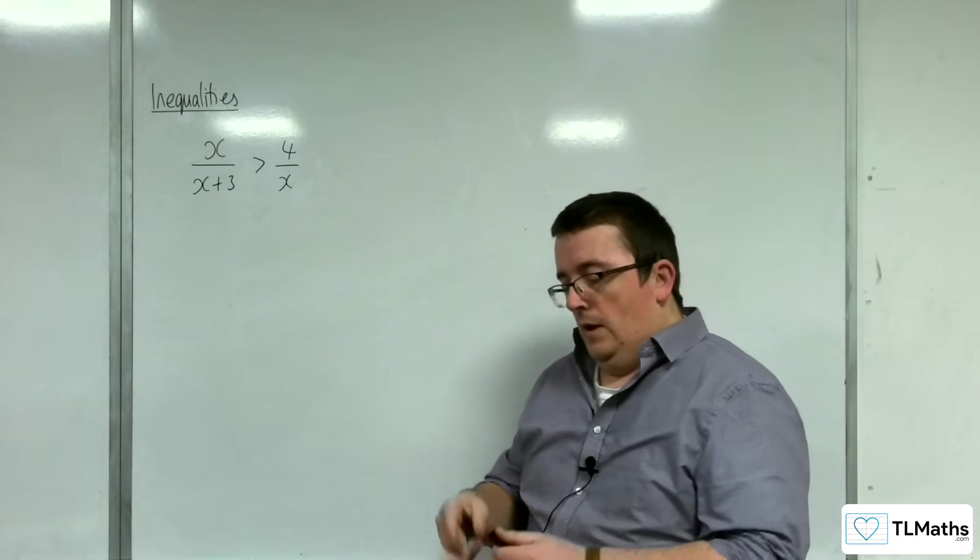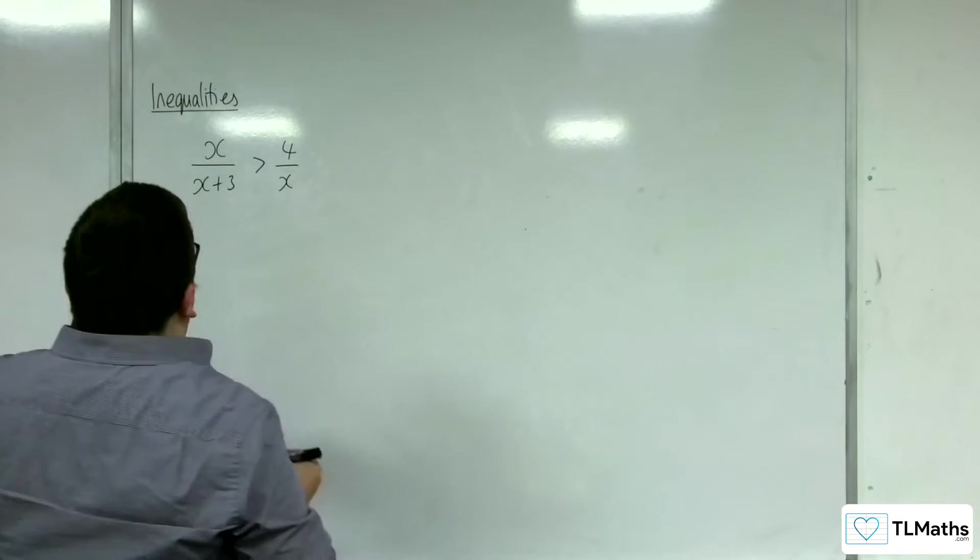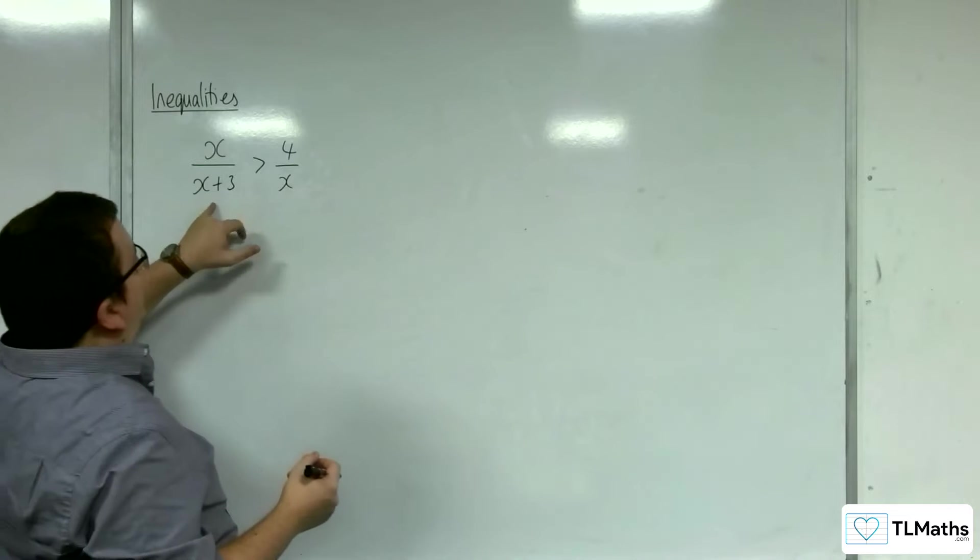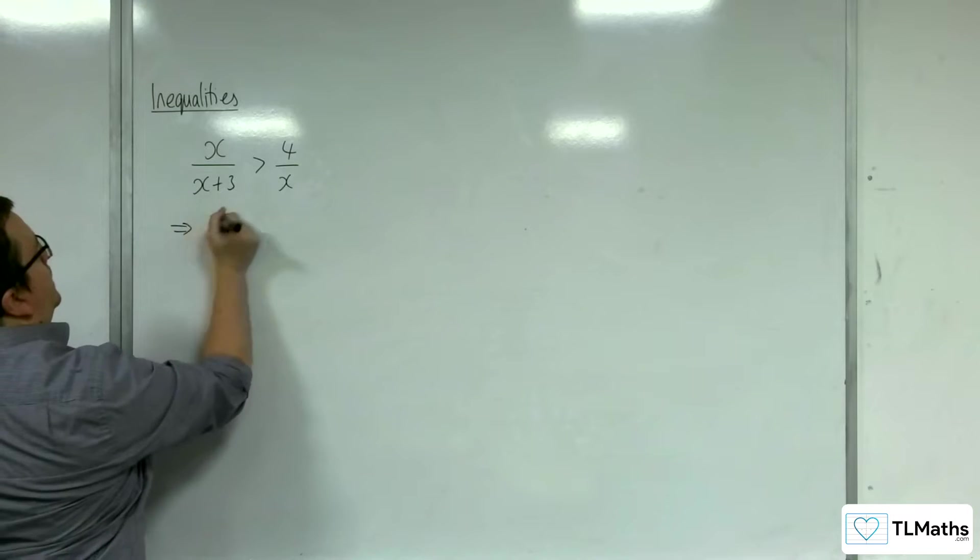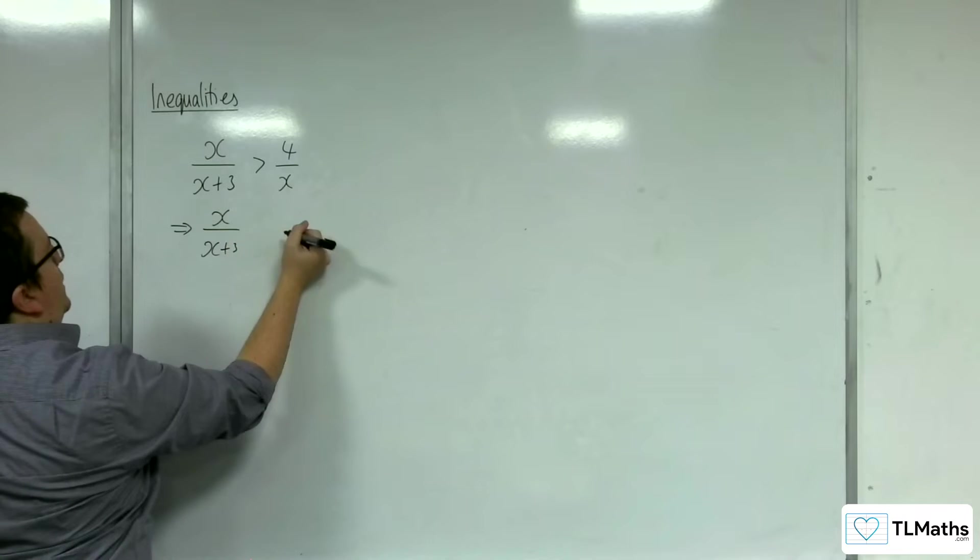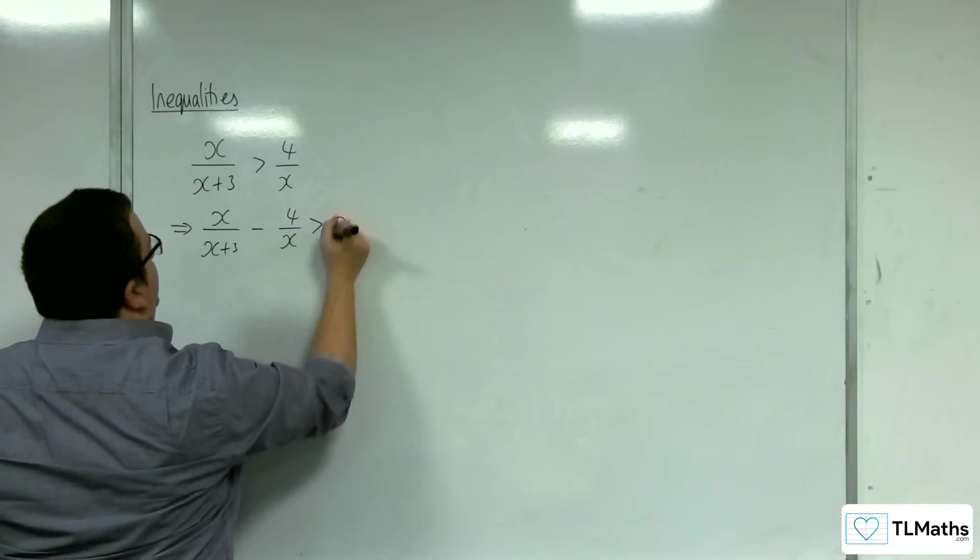Okay, so I'm going to go down the graphical route first. Now what I'm going to want to do is combine these two expressions. So I'm going to first of all get everything onto one side of the inequality. So take away 4 over x is greater than 0.